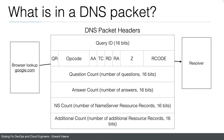The header also contains counts: question count (how many questions), answer count (higher than zero in a response), name server count (how many name server records), and additional count (the number of additional resource records). For example, if we have a name server available, the name server entry will only be a host name, but if we also have IP addresses, they'll be in the additional records. These are all just counts of how many records appear in the data part of the packet.